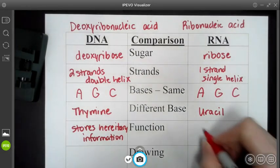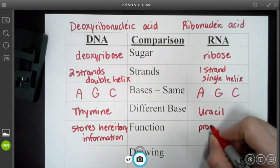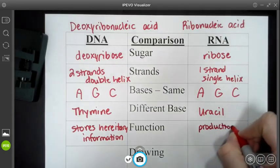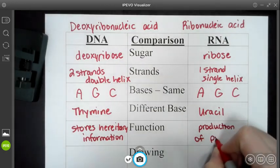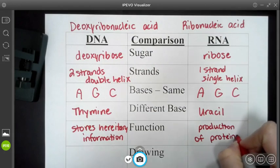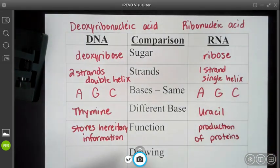Now the purpose of RNA is the production of proteins. So it's actually going to store the directions on how to make certain proteins within your body.